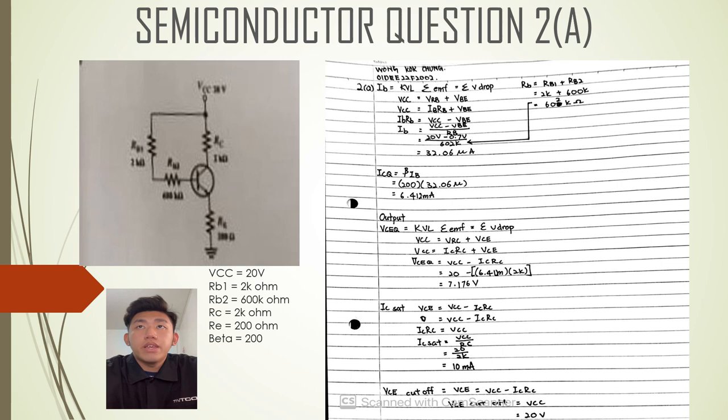We want to find IB. For IBE, we must use the KVL summation EMF equal to summation of voltage drop. VCC equals VRB plus VBE, so IB equals VCC minus VBE divided by RB, which equals 20V minus 0.7V divided by 602K ohm, equals 32.06 microampere.